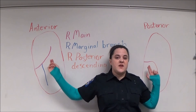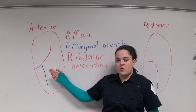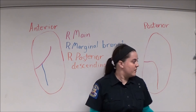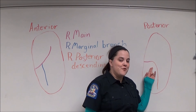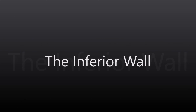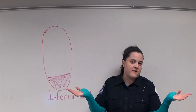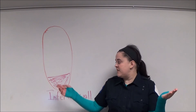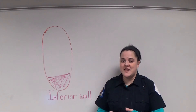The right coronary artery supplies blood to the right atrium and also to the right ventricle. The right marginal coronary artery branches off and supplies blood to the anterior wall of the right ventricle. The posterior descending artery supplies blood to the posterior wall of the right ventricle. The inferior wall of the heart can either be left or right coronary artery dominant, meaning that if the patient is left coronary artery dominant, the blood supply to the inferior wall comes from the left coronary artery. This can only be determined through an angiogram.